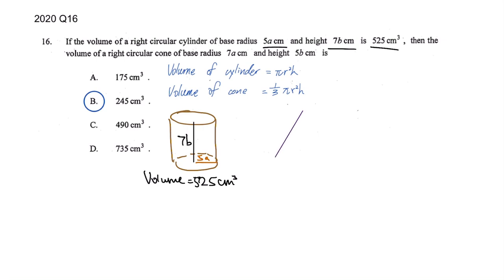Cone is just like the ice cream cone. If you know how to draw the ice cream cone, just draw it vertically and then you can find it. Base radius is 7a, this is 5b.